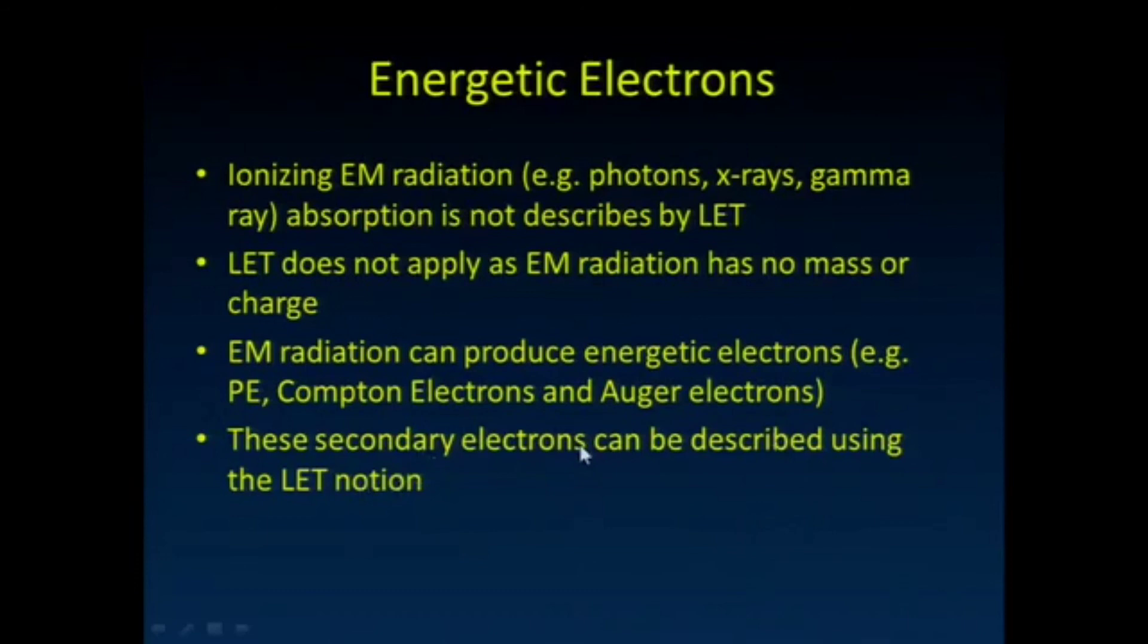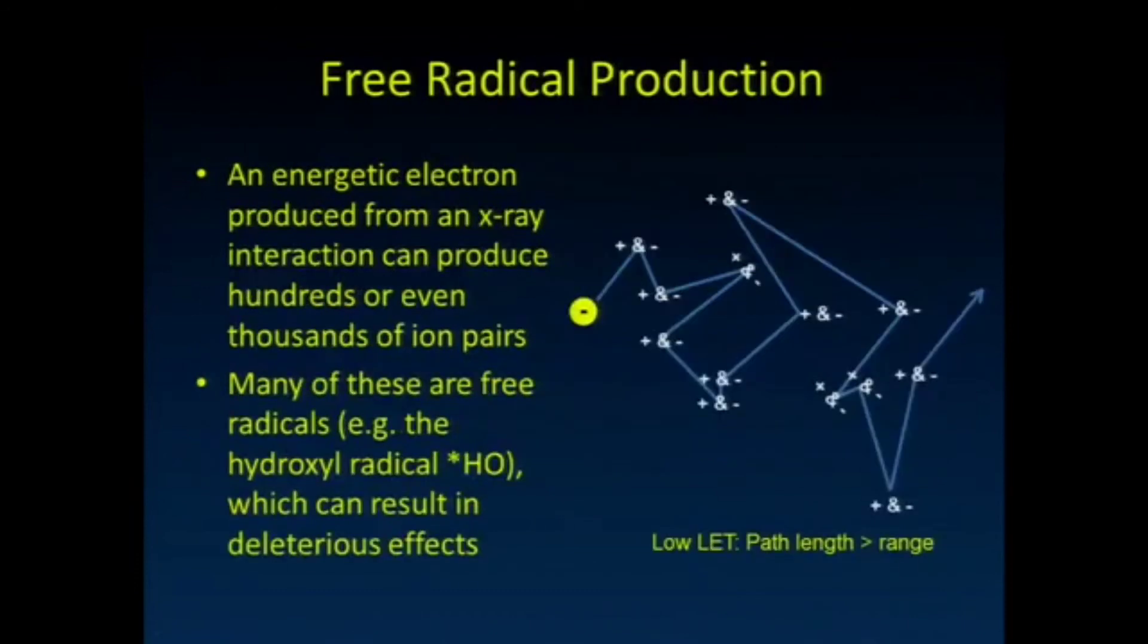So it shouldn't be surprising that when we look at the relative weighting factors of how much damage that different types of radiation do, that gamma rays and x-rays really fall in the same category as low LET radiation like energetic electrons.